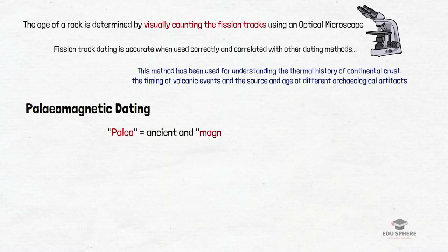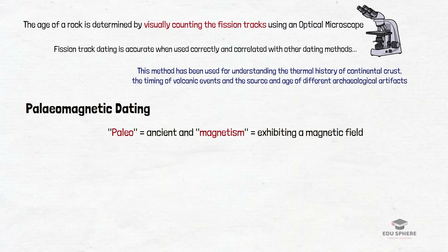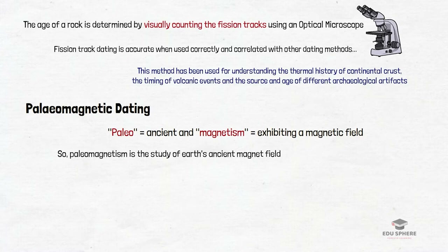The next absolute dating technique is paleomagnetic dating. Paleomagnetism is the study of earth's past magnetic field. It is the combination of two words: paleo, which means ancient, and magnetism, which means exhibiting a magnetic field. Paleomagnetism is linked to the earth's magnetic field — the earth actually acts like a large spherical magnet, surrounded by a magnetic field that changes with time and location.